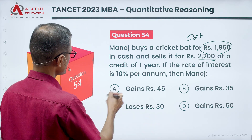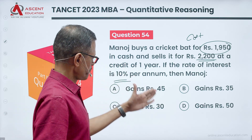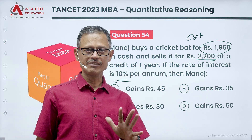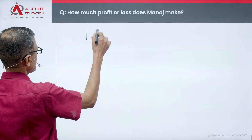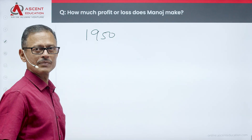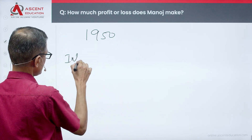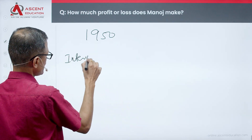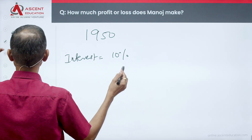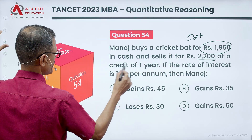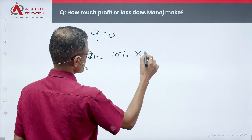The rate of interest is 10% per annum. So, the interest for one year is equal to 10% of ₹1950, which gives us ₹195.